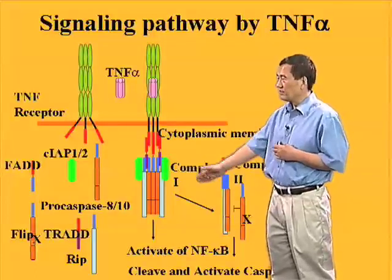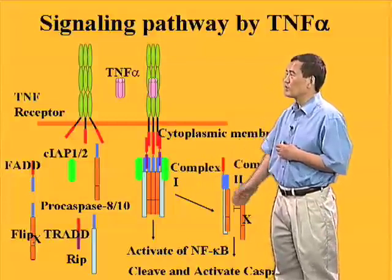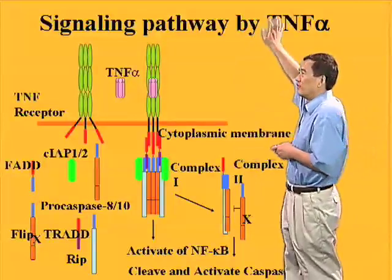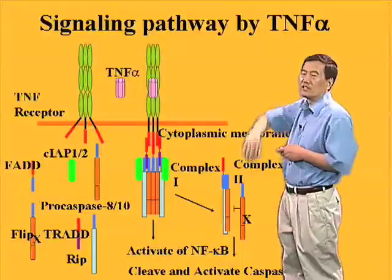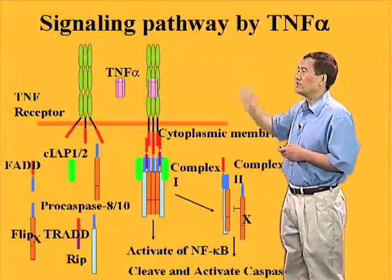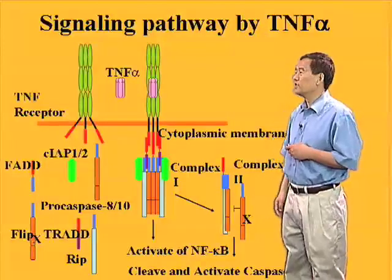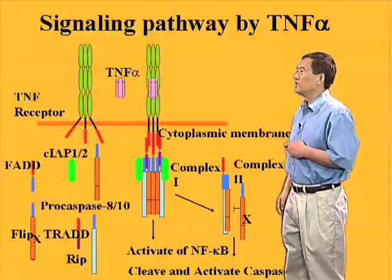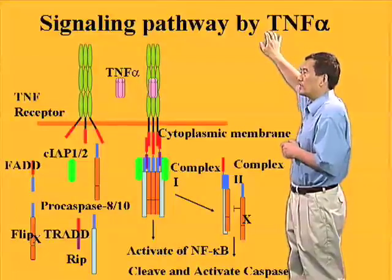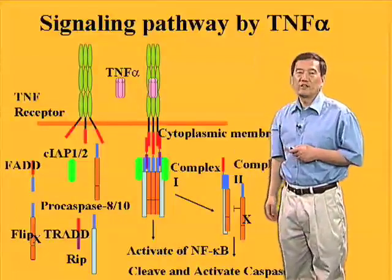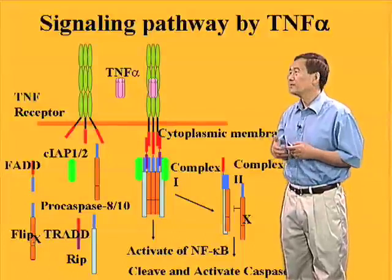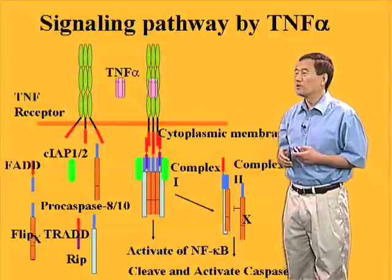Understanding this switching process is very important for our understanding of TNF signaling. TNF-alpha is highly relevant to many human diseases — for example, neutralizing antibodies or soluble receptors targeting TNF-alpha are widely used for treatment of autoimmune diseases like rheumatoid arthritis.